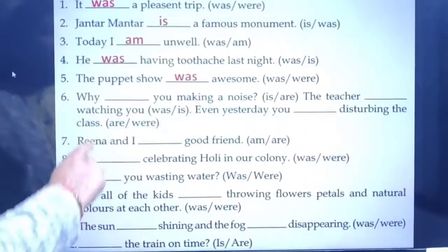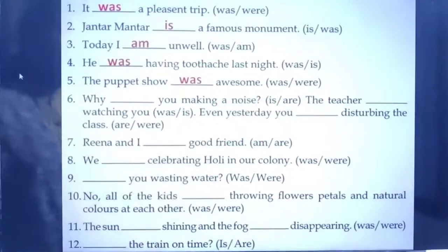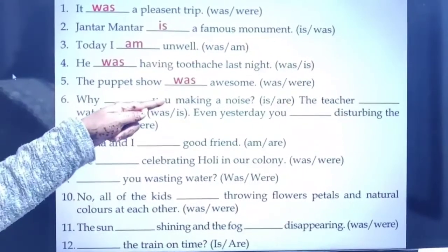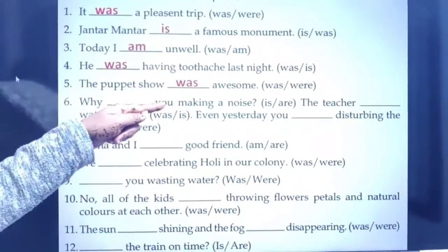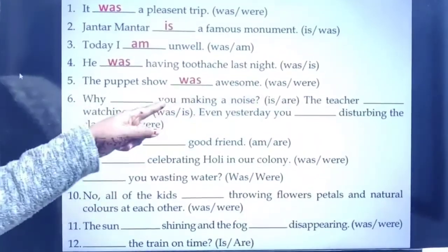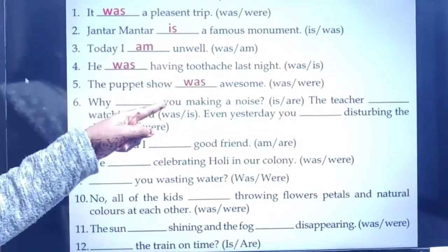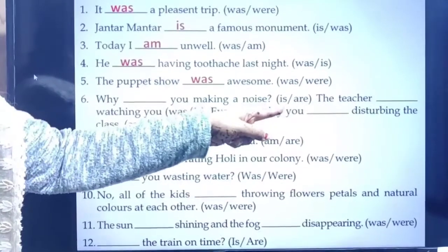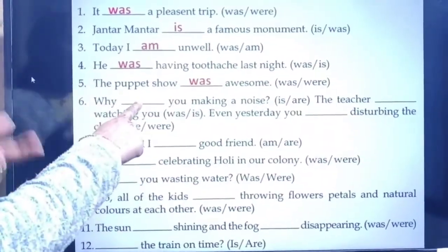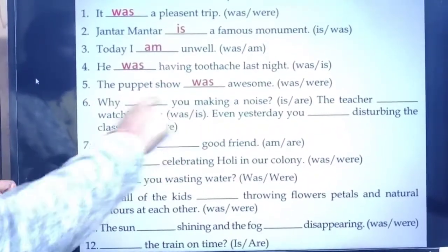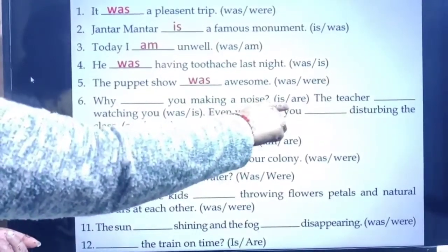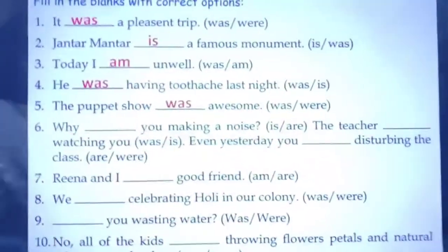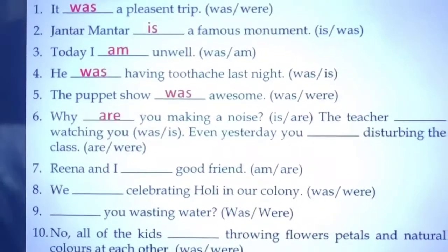Next: 'Why ___ you making a noise?' Options are is or are, both present form. Whenever your subject is you and the sentence is in present form, you use are. So: why are you making a noise? Next: 'The teacher ___ watching you.' The sentence is in present form, and teacher is singular, so: the teacher is watching you.